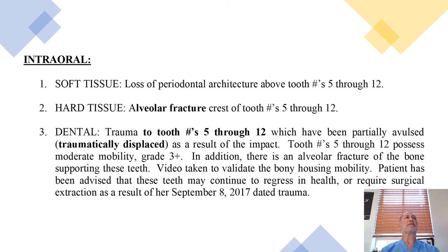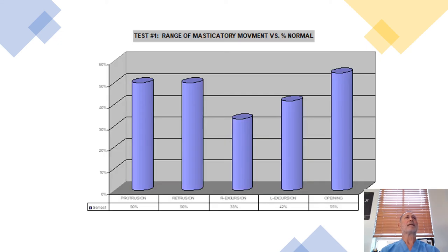Intraoral: There was soft tissue with loss of periodontal architecture, tooth numbers 5 through 12. Hard tissue showed alveolar fracture involving tooth numbers 5 through 12. Dental trauma to tooth numbers 5 through 12 — which have been partially avulsed as a result of the impact. This is a range of masticatory movements demonstrating the percent of movement to full range of movement in all five different ranges: right and left lateral movements, protrusive, retrusive, and inter-incisal opening.